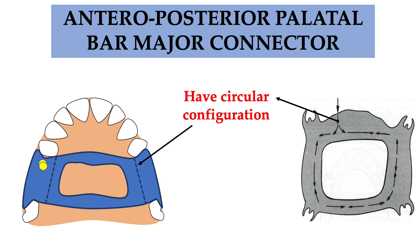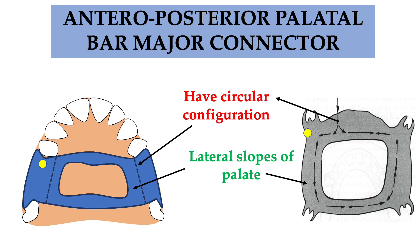The circular configuration is important because the design incorporates lateral slopes of the palate on the sides, a strap anteriorly, and a bar posteriorly. This circular geometry makes it more rigid, helps distribute forces, and leaves the center of the palate free — making it somewhat more comfortable to the patient. The circular geometry provides rigidity to resist bending, twisting, and dislodgement forces.